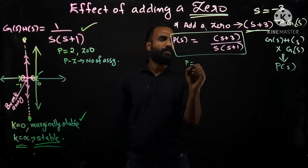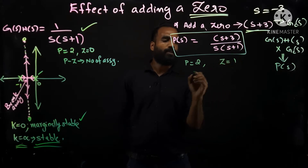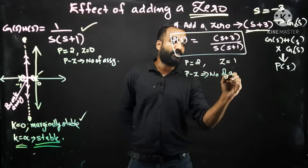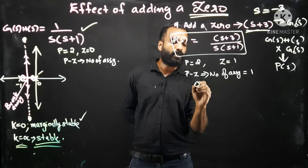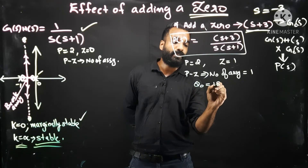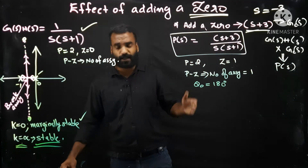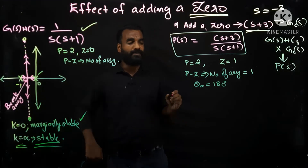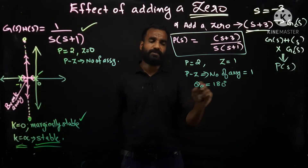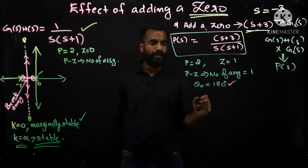Now I am going to draw the root locus of this new system. The poles are at s=-1 and s=0, so the number of poles p=2, and number of zeros z=1. Therefore p minus z, the number of asymptotes, equals 1. With only one asymptote, the angle of asymptote is (2l+1)×180°/（p-z) = 180°. So there is only one asymptote at 180°.